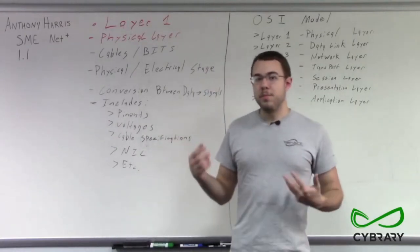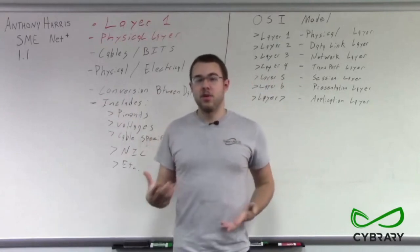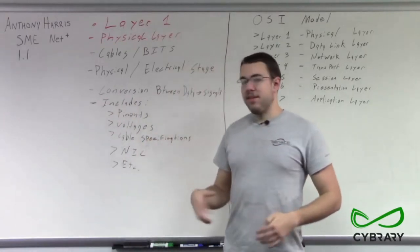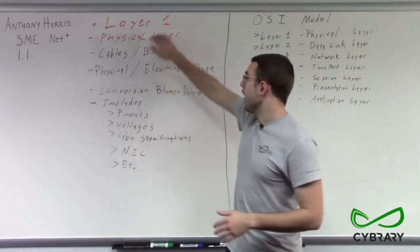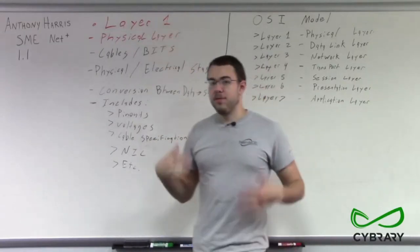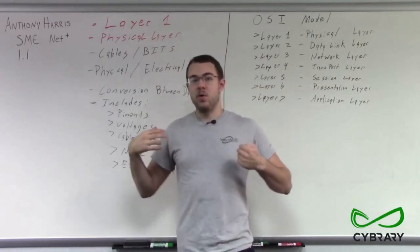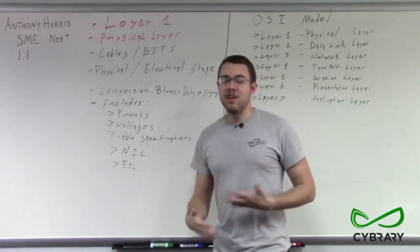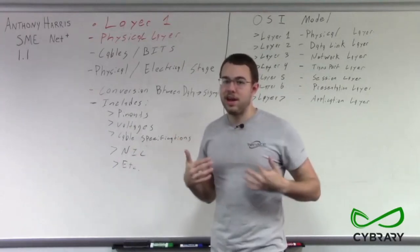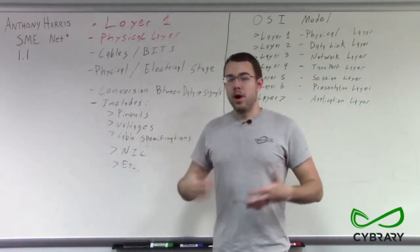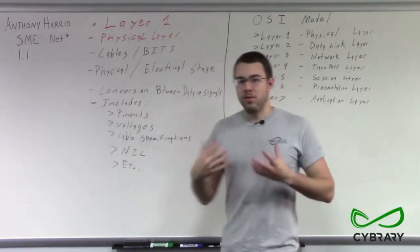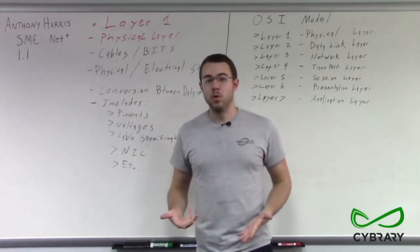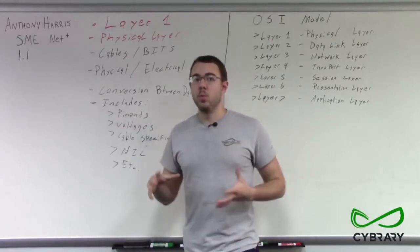Network interface cards are the physical ports and physical cards inside our computer. When we think of layer 1, we're thinking of the first point in our transfer of data — the first stage in our series of networking stages needed to perform a network connection — where we actually have physical signals, things that we can measure and things that we can hold. Those are going to be our layer 1 devices.